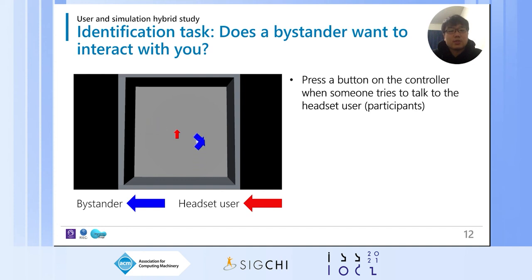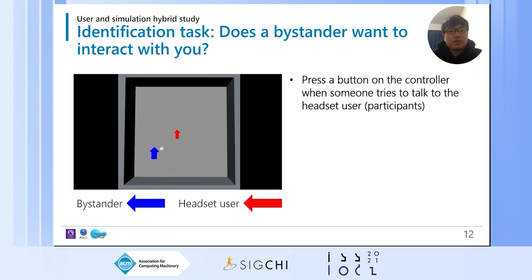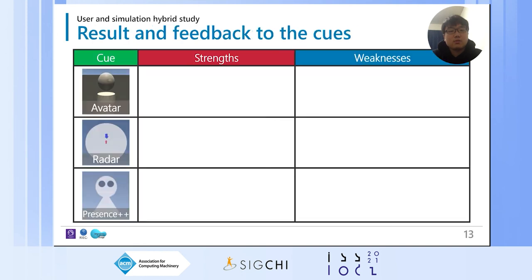We protocoled several scenarios of bystanders. This video shows movements of bystanders from a top view. In the identification task, we developed eight bystander scenarios and in four of the eight scenarios a bystander would try to talk to the participant. As a baseline condition, we asked participants to experience the three VR contents with no visualization condition as well. Through these tasks, we found that AvatarView could increase headset users' informal awareness more than other cues.